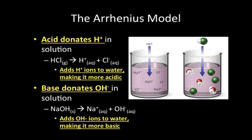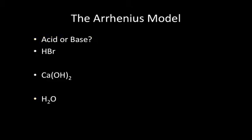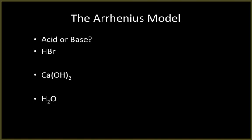In the Arrhenius model, bases donate OH- in solution. When we take sodium hydroxide (NaOH) and have it dissociate in water, it breaks apart into Na+ and OH-. This adds more OH- ions to the water, making it more basic. So: donate H+ → acidic; donate OH- → basic.